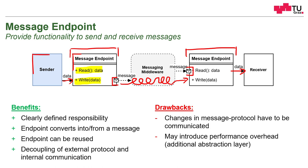Instead of directly packing a message and communicating it using only the functionality we need, we have to use this message endpoint, which may provide much more functionality than needed and could introduce performance overhead. There is also a single point of failure: if the message endpoint is a single thread working on a queue and sending all messages over the network, it could become a bottleneck, and if it fails, the whole application cannot send messages anymore.